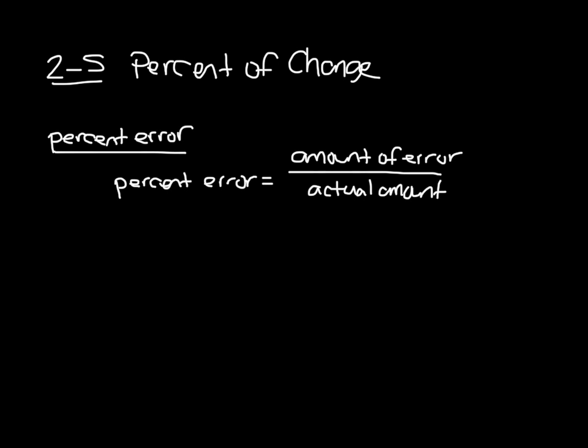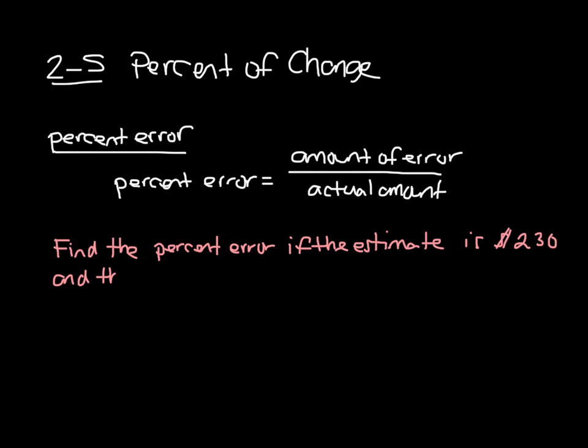So if we look at an example of this, find the percent error. If the estimate is $230, and the actual amount is $245. Now for this question, we can round to the nearest whole percent.